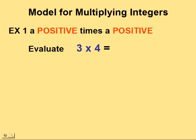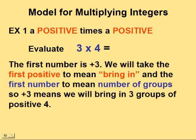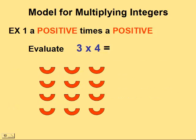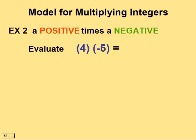Now let's begin with the multiplication of integers. We'll start by multiplying a positive integer times another positive integer. In our model, the first positive number means 'bring in' and the first number means the number of groups. So positive three means we will bring in three groups of positive four. This looks like three columns of four smiles, and three columns of four equals 12 — so positive three times positive four equals positive 12.